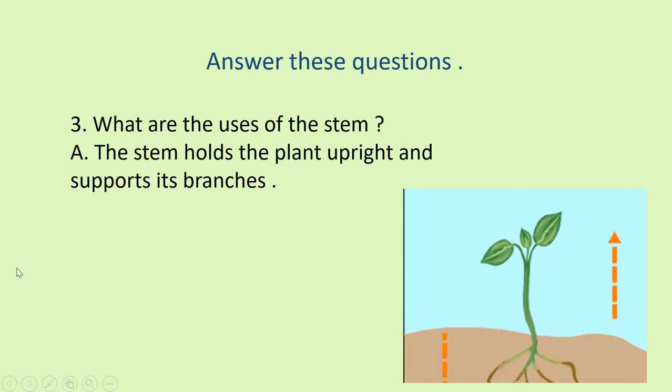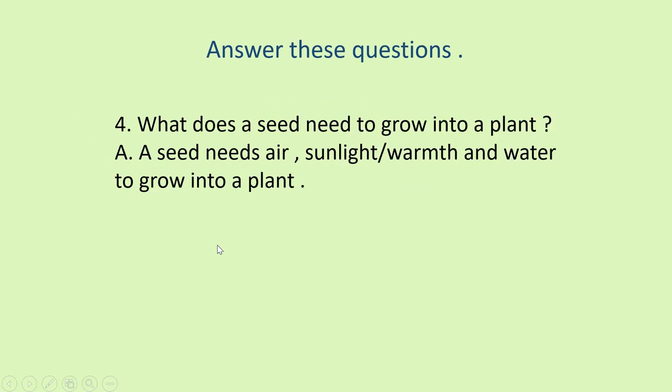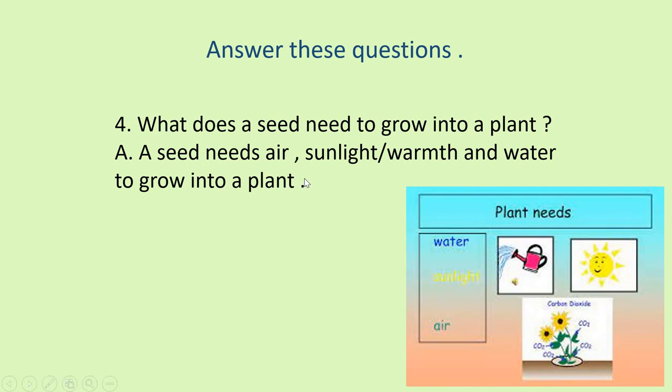So, now come to number three. What are the uses of the stem? The stem holds the plant upright, upright and supports its branches also. Okay? Number four, what does a seed need to grow into a plant? A seed needs air, sunlight, and water. And you can write sunlight or warmth also. Okay? So, these three things are required by a plant, by a seed to grow into a plant.